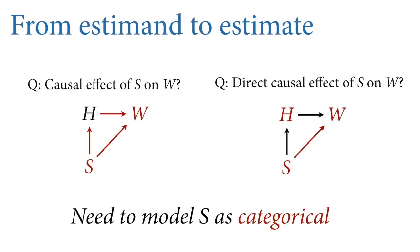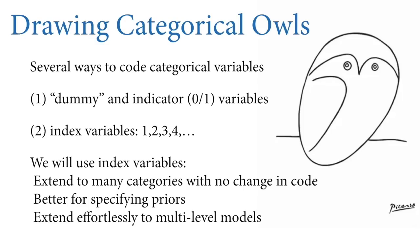Let's consider just two of these: the total causal effect of sex on weight, and the direct causal effect of sex on weight. To answer these questions statistically, we're going to have to model sex as a categorical variable, which gives us a good excuse to teach you how to work with categorical variables. There are several ways to do this in statistics, and all of them are technically equivalent. Let's draw the owl — drawing categorical owls here.